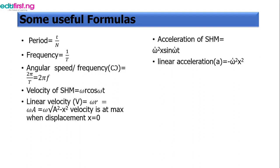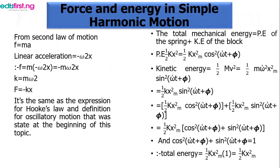The acceleration equals omega squared x sin(omega t), and the linear acceleration equals omega squared x. Now there is a force — the spring in simple harmonic motion exerts a force from the second law of motion, which says F equals ma, and our acceleration as stated earlier equals minus omega squared x.